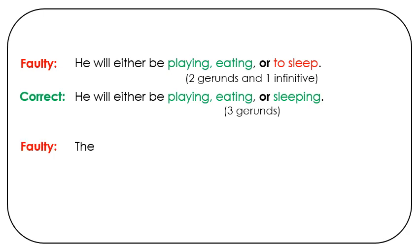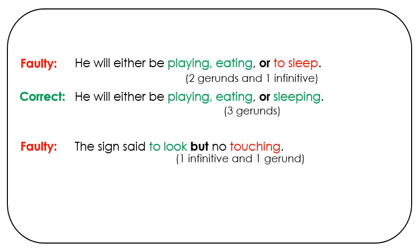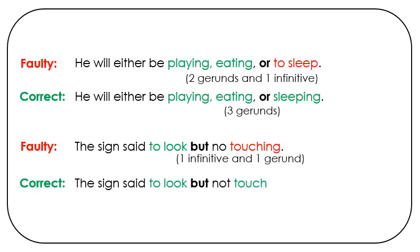Another example: The sign said to look, but no touching. We have one infinitive and one gerund. It would be better to say: The sign said to look, but not touch. Two infinitives sharing the same form.